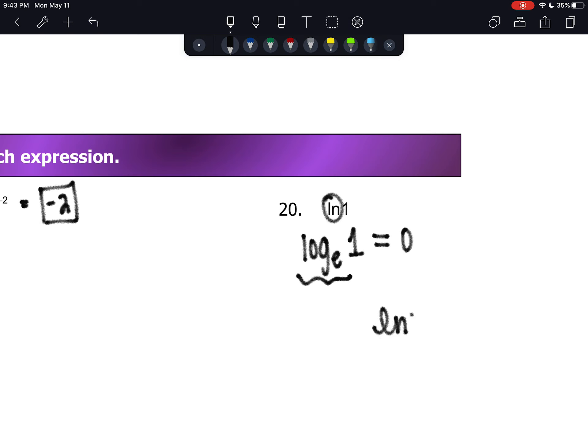Well, E to the 0 power is 1. Therefore, the natural log of 1 is equal to 0.